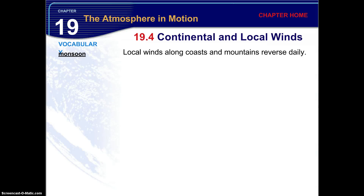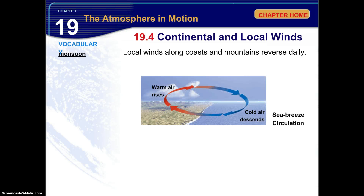Local winds along coasts and mountains reverse daily. In the sea breeze circulation, cool air descends to the surface of the water, then moves toward the low pressure area — high pressure to low pressure — going toward the beach or coast. As it heats up on land, the warm air rises, moves out towards the water, cools off, goes back down to the surface, and continues this cycle. This circulation pattern is called a sea breeze circulation.